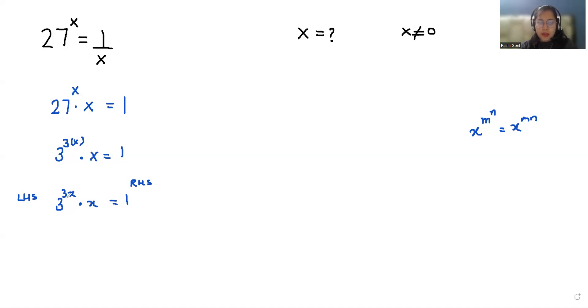To eliminate this 3, we can let x = 1/3. If I write 3^(3 × 1/3) × 1/3, we get 3^1 × 1/3, and these eliminate each other.